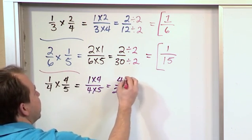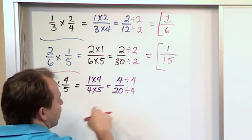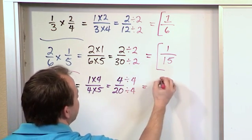And so, but on the top, we know we can divide by 4 and we can also divide the bottom by 4 because we know 4 times 5 is 20. And so on the top, we'll get 1.